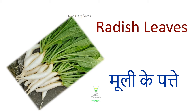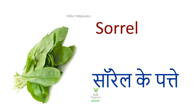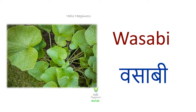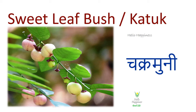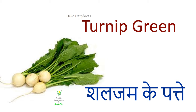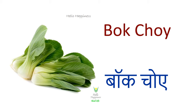Radish leaves — Mooli ke patte. Sorrel — Surayli ke patte. Wasabi — Kaale. Kraspy leaves — Latari Kesari. Sweet leaf bush — Chakramuni. Turnip greens — Shaljum ke patte. Bok choy — Bukchoya.